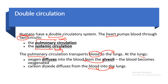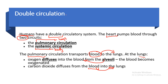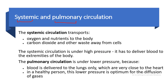In double circulation, the blood passes through the heart twice in one complete circulation — once through the systemic circulation and once through the pulmonary circulation. We have already covered pulmonary circulation; now we are going to focus on systemic circulation.